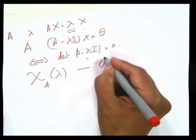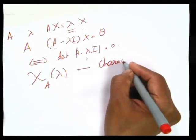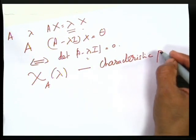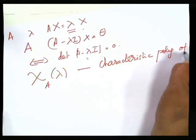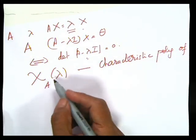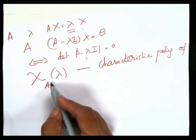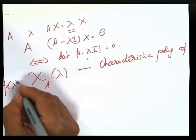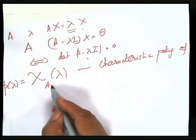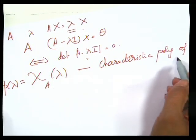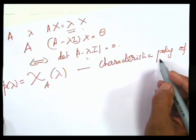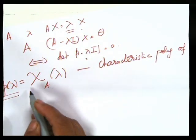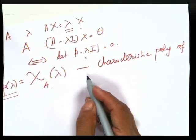Chi_A(lambda) is called the characteristic polynomial of A. Therefore, lambda is an eigenvalue if and only if lambda is a root of the equation p(lambda) = 0, where p(lambda) is the same as chi_A(lambda).